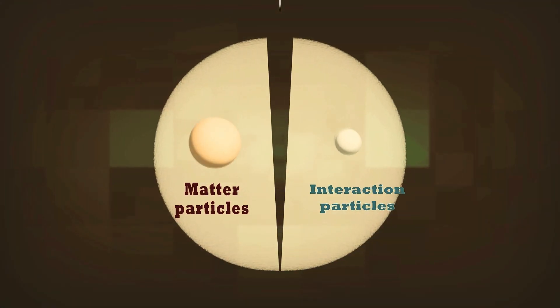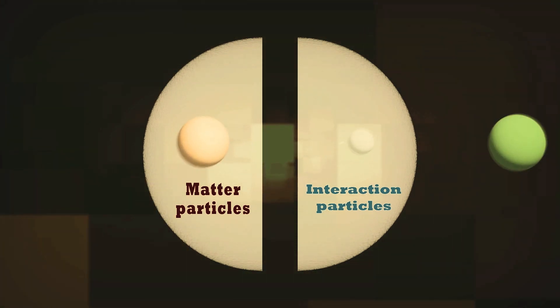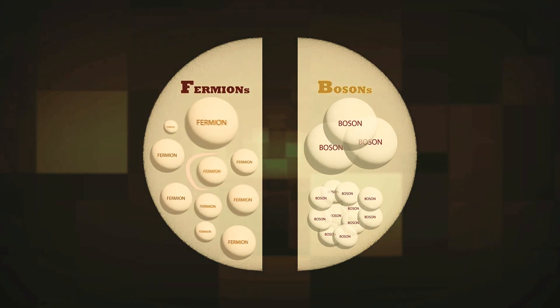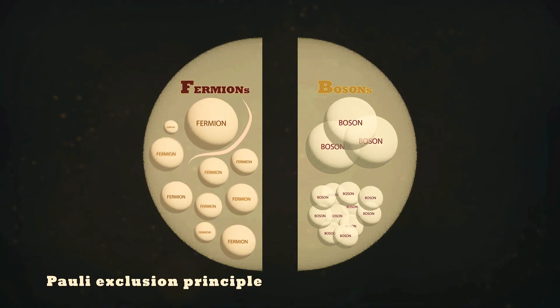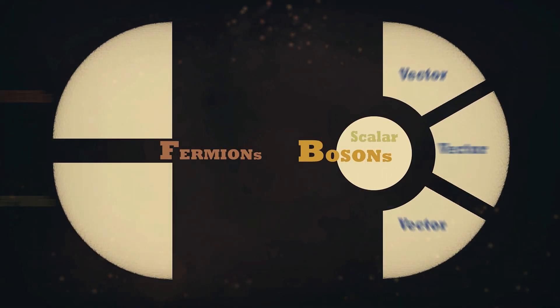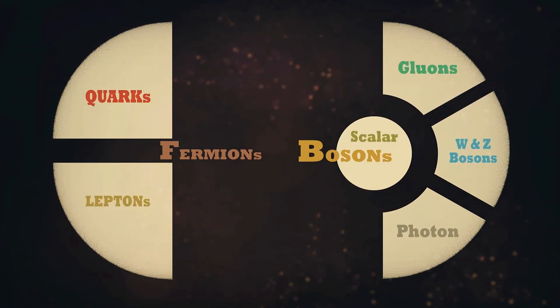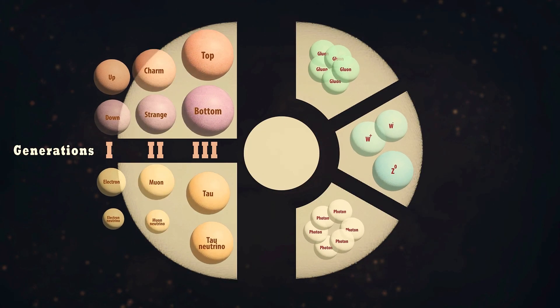The standard model consists of massive particles, called fermions, and interaction particles, called bosons. Fermions obey the Pauli exclusion principle, which states that no two fermions can exist with certain identical properties. Fermions are either quarks or leptons, and are divided into three generations.